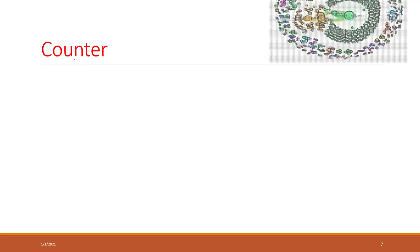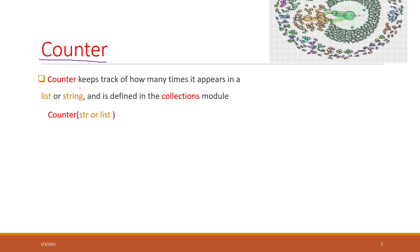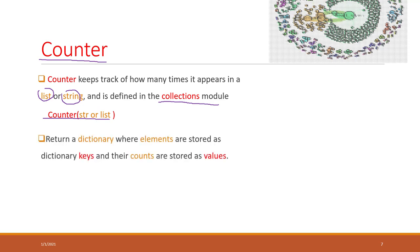Since we are talking about loading text files into Python, I want to introduce some very useful tools and functions. The first one is called Counter. Counter is a very useful function that can help us count the number of items that appear in a list or within a string. The Counter function is in the collections module, so we need to import the module first. It will return a dictionary where the elements are stored as keys and counts are stored as values.